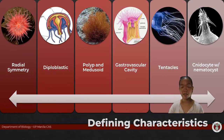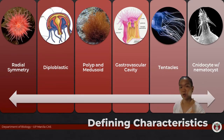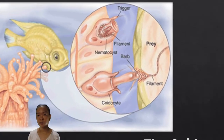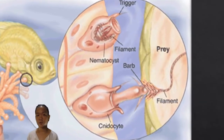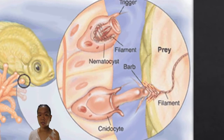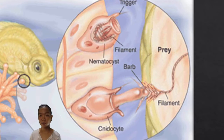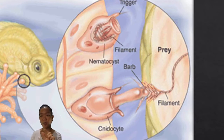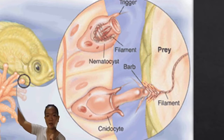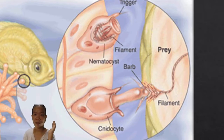Cnidarians have tentacles with special cells called cnidocytes. These are special cells that line the tentacles, and inside each cnidocyte is an organelle called a nematocyst. The nematocyst has a barb that shoots out like a harpoon, and that is how they mainly capture their food.